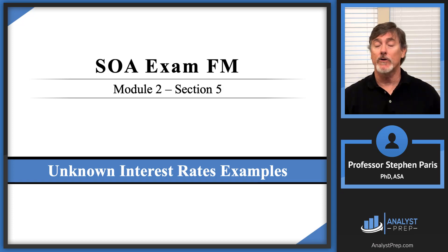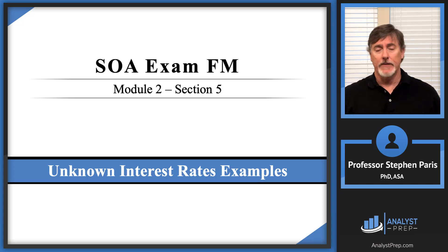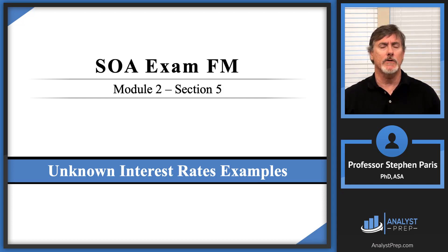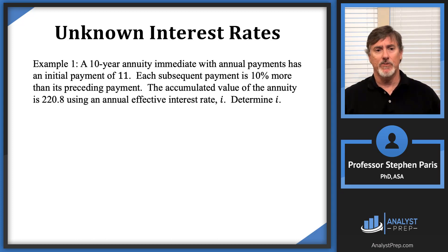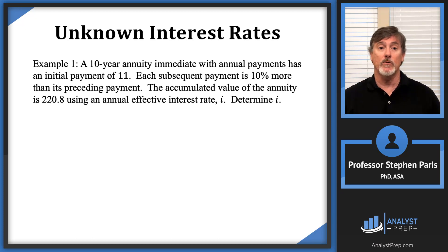In this example we're going to look at an unknown interest rates example with respect to geometric annuities. These are usually a little bit harder and you have to approach it from a different direction. We have a 10-year annuity immediate with annual payments, an initial payment of 11, each subsequent payment is 10% more than its preceding payment, and the accumulated value of the annuity is 220.8 using an annual effective interest rate i.